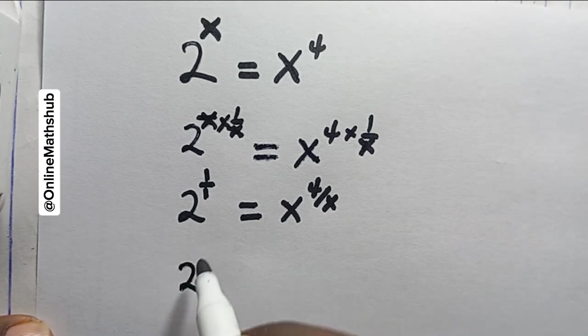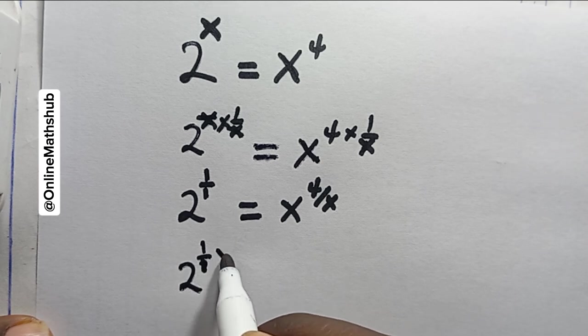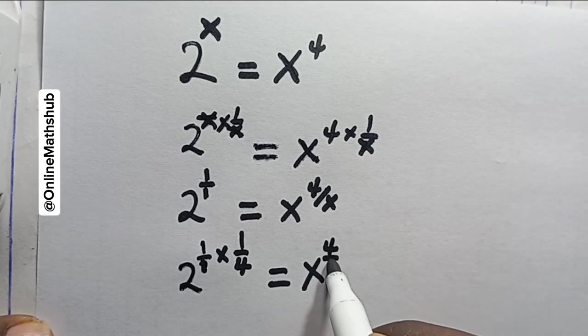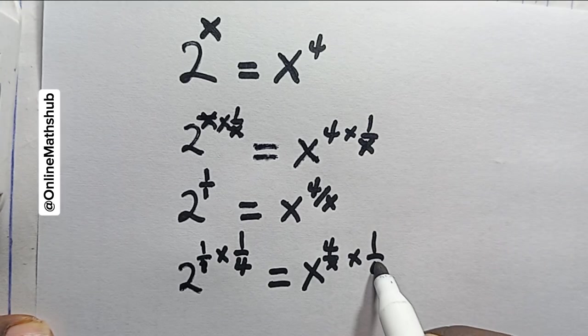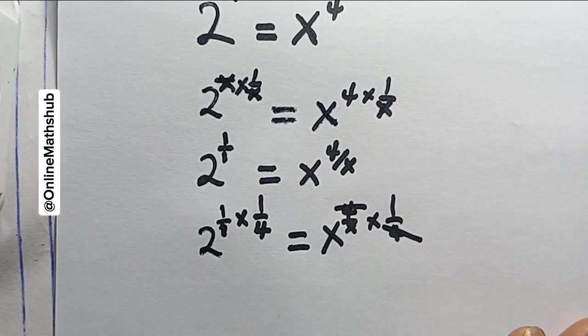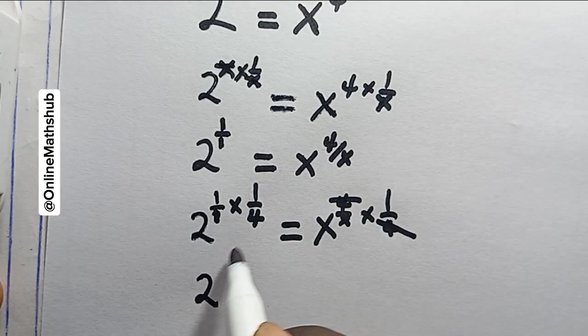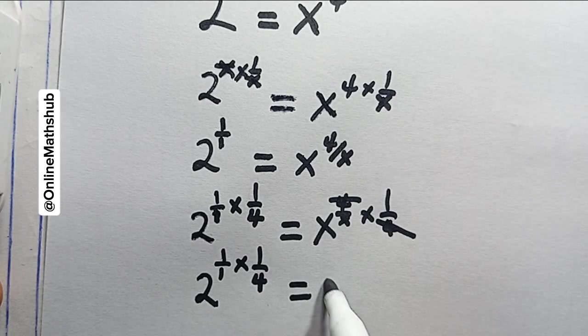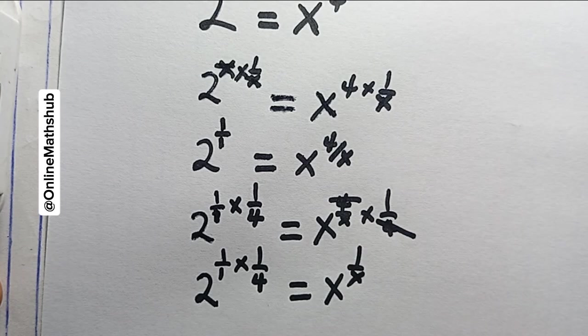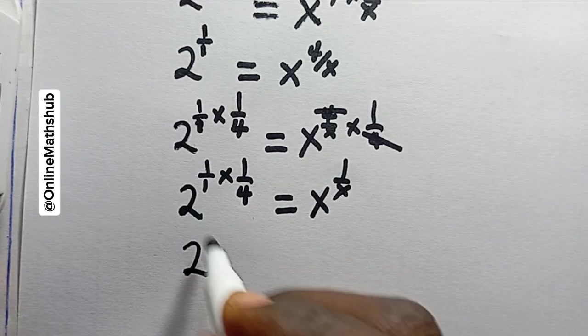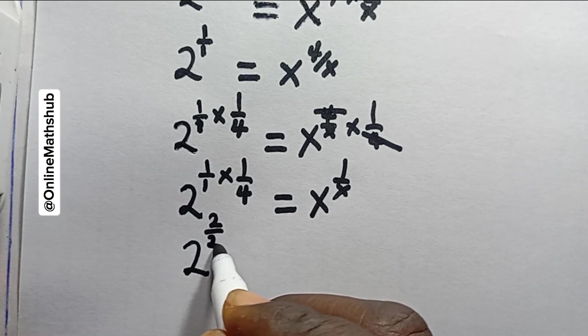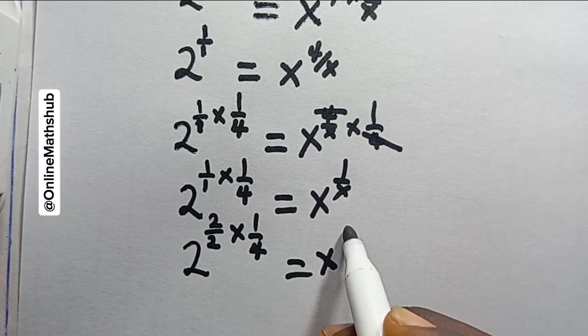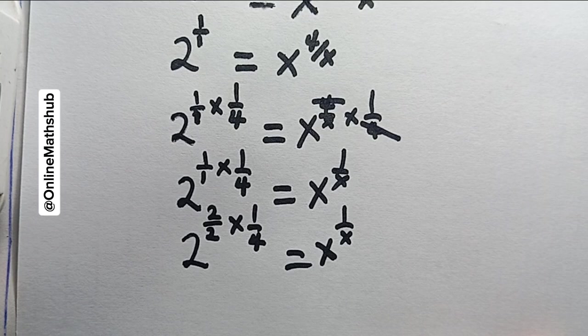If I do that, I'm going to have 2^(1/1 × 1/4) equals x^(4/x × 1/4), so that this 4 can cancel. What I'm left with is 2^(1/4) equals x^(1/x).